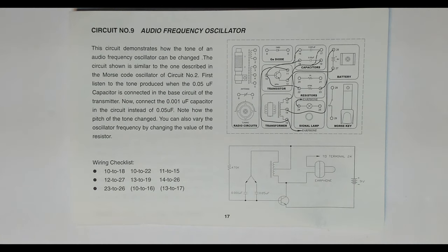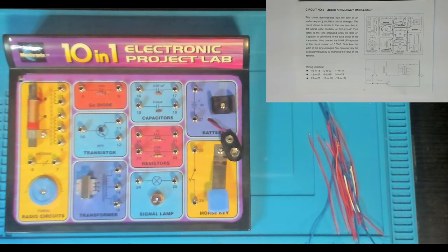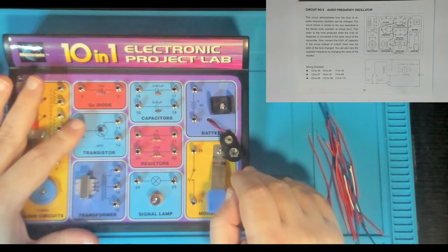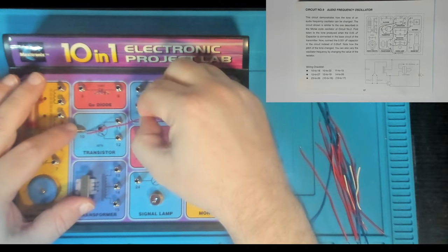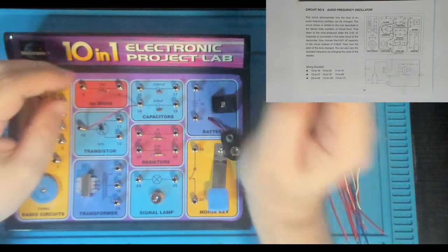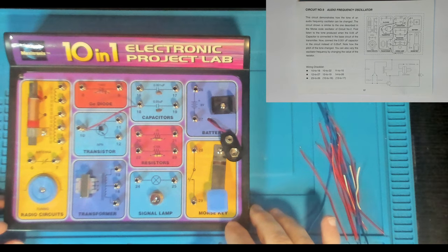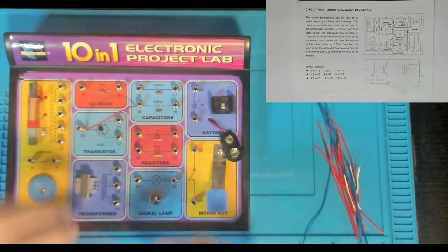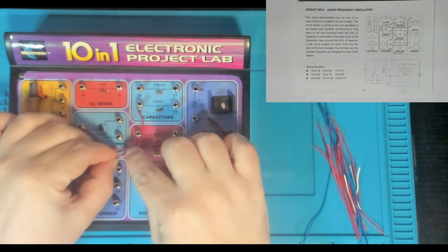Let's put this together. The first connection is 10 to 18 — that's putting the base of the NPN transistor into the ceramic capacitor. And then we've got 10 to 22, which is for the 470 kilohm resistor.